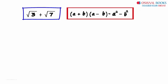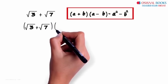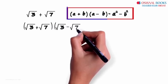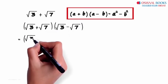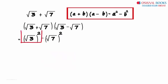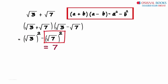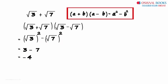So what do we multiply this with? Let's try multiplying root 3 plus root 7 with root 3 minus root 7. Using this identity, we can say that this equals root 3 squared minus root 7 squared. Root 3 squared equals 3 and root 7 squared equals 7. Hence this equals 3 minus 7, which equals minus 4. And minus 4 is a rational number.